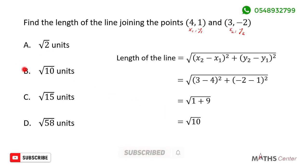So it means that the length of the line joining these two points is √10 units. When we look through the options here, the correct option is option B, √10 units.